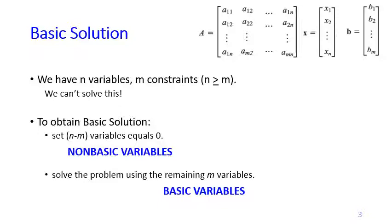The variables we set to zero are called non-basic variables. The remaining m variables that we actually solve for are called basic variables. Don't confuse basic solution with basic variable: a basic solution refers to the complete set of values for both the non-basic and basic variables.